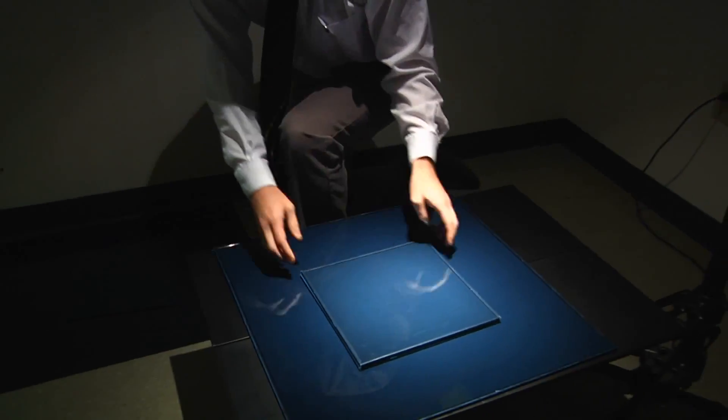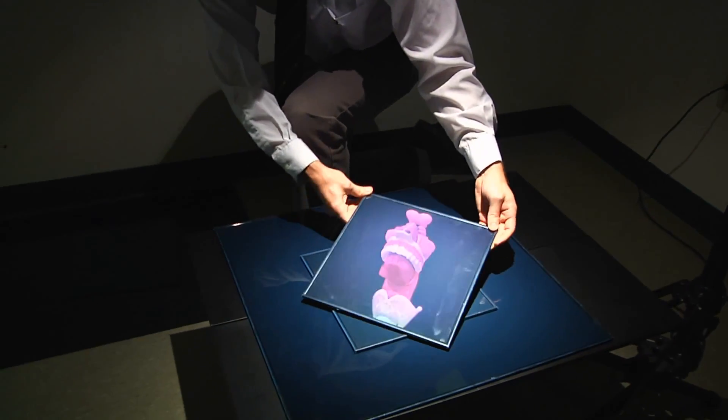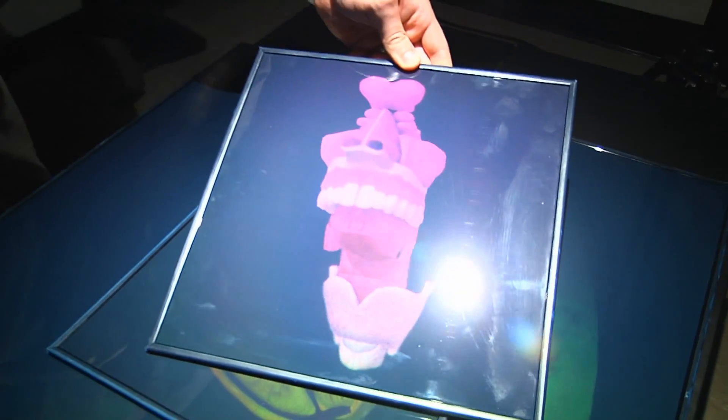3D hologram technology operates by creating the illusion of three-dimensional imagery. A light source is projected onto the surface of an object and scattered. A second light illuminates the object to create interference between both sources. Essentially, the two light sources interact with each other and cause diffraction, which appears as a 3D image.